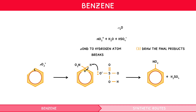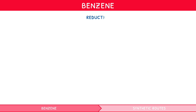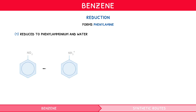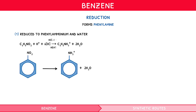The second reaction involving benzene you must learn is the reduction of nitrobenzene to form phenylamine. This is a benzene ring with an amine functional group, i.e. NH2 group, and is formed in a two-stage reaction. First, nitrobenzene is reduced to form the phenyl ammonium ion plus water, in the presence of heat, concentrated HCl, and a reducing agent such as tin. The displayed and chemical equations are as shown.